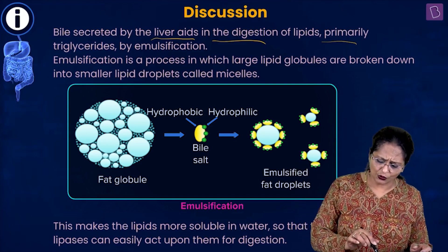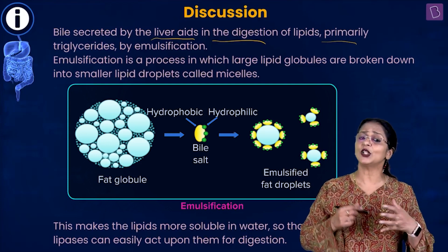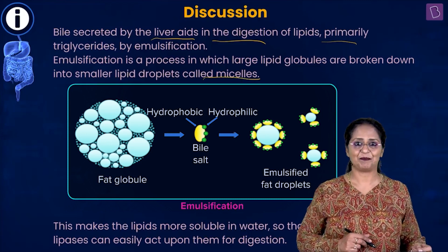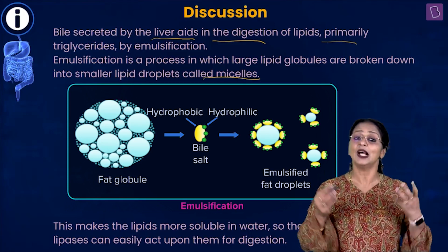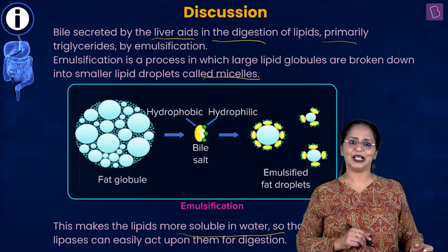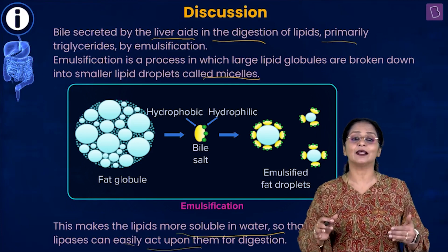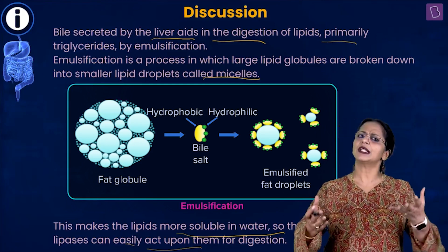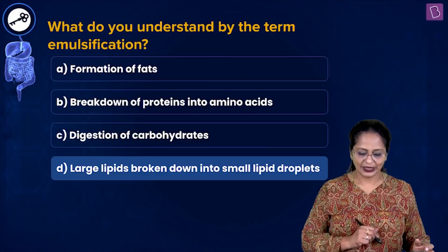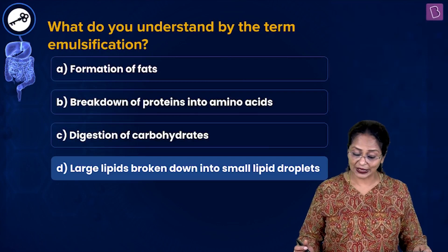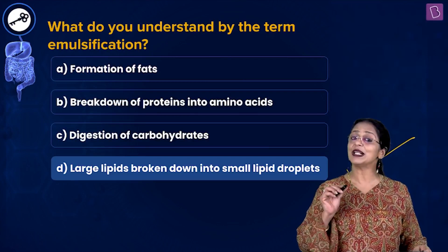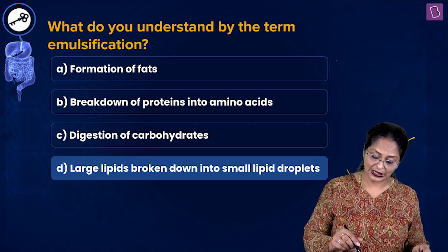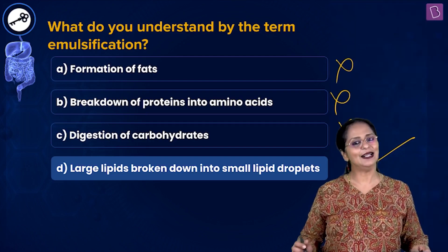A large fat globule is broken down by bile salts, which are present in the bile juice, into small droplets called micelles. The lipid globules are broken down into small droplets called micelles so that they become more soluble in water and can be easily broken down by the lipase enzyme, so that triglycerides are finally broken down into glycerol and fatty acids for absorption. The right answer is D — large lipids broken down into small lipid droplets called micelles. A, B, and C are eliminated.